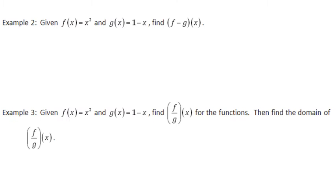Moving on to our next example, we've got the same functions, but this time we're finding the difference. And notice it is the f function minus the g function. So I'm going to take x squared and subtract 1 minus x. And I like to put that in parentheses to remind myself that I am subtracting all of the terms of that function. So my final answer would be x squared plus x minus 1.